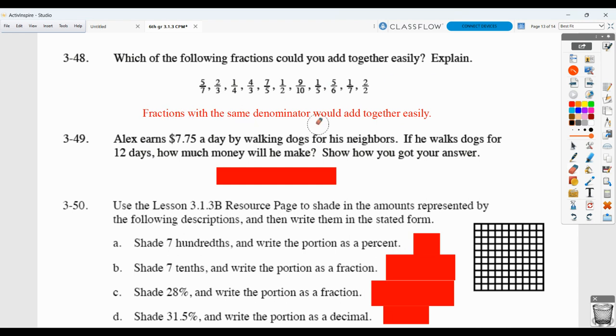Alex earns this much per day by walking dogs. If he walks dogs for 12 days, how much money will he make? So you need to show, as it said, how you got the answer. So you're taking $7.75 and you're multiplying by 12. Now, remember when you multiply a decimal times a decimal or a decimal times a whole number, either way, you're going to first of all, think of it as though it's just whole numbers. You're going to ignore the decimal to begin with.